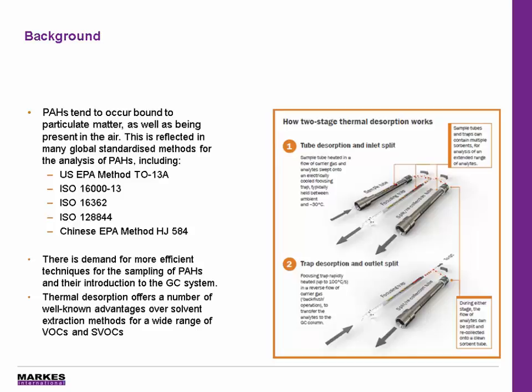The focusing trap is then heated up in the second stage of thermal desorption, and a reverse flow of gas through the focusing trap transfers the compounds of interest to the GC column and to the detector. At this point we can also split for a second time — termed the outlet split — where the vapours of interest can be taken onto a clean sorbent tube and recollected. These tubes can then be re-analysed at a later date.